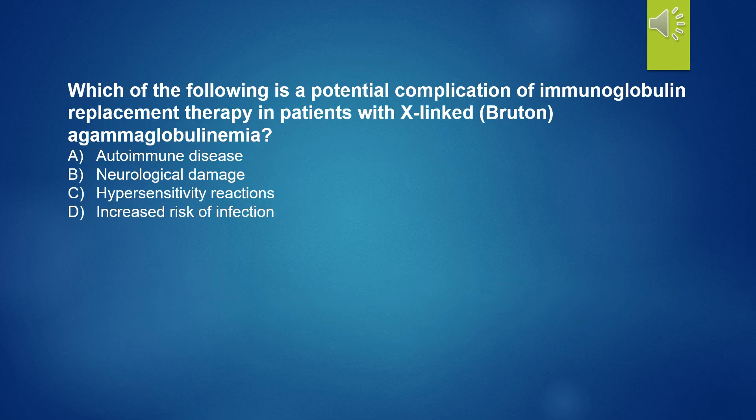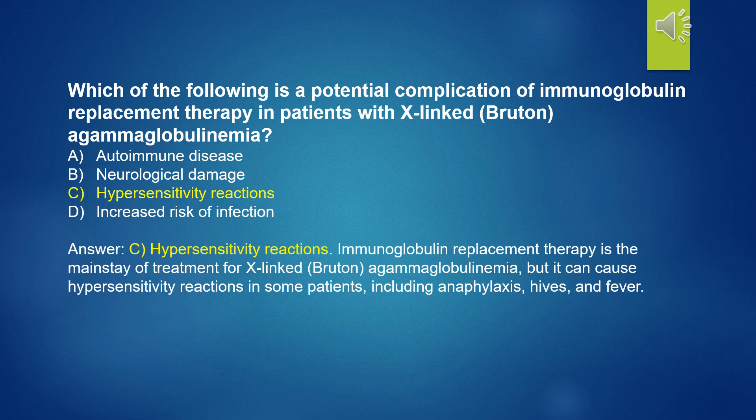Which of the following is a potential complication of immunoglobulin replacement therapy in patients with XLA? A. Autoimmune disease. B. Neurological damage. C. Hypersensitivity reactions. D. Increased risk of infection. The answer is C — hypersensitivity reactions. Immunoglobulin replacement therapy is the mainstay of treatment for XLA, but it can cause hypersensitivity reactions in some patients, including anaphylaxis, hives, and fever.